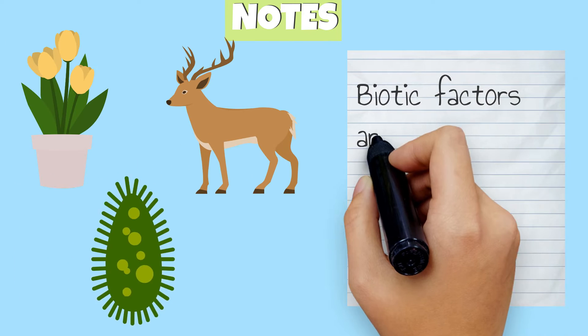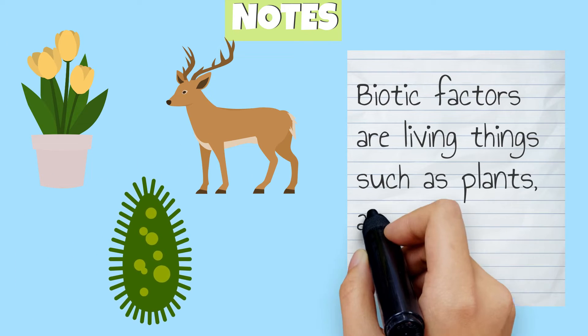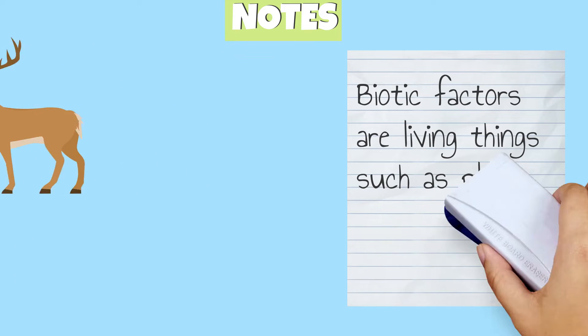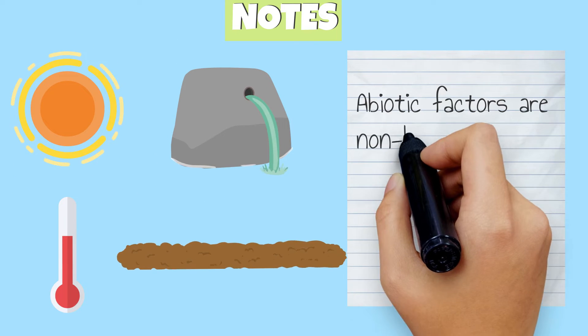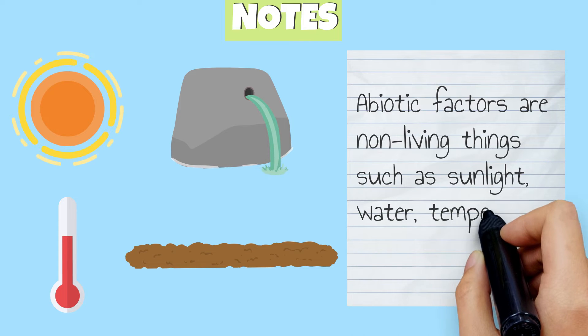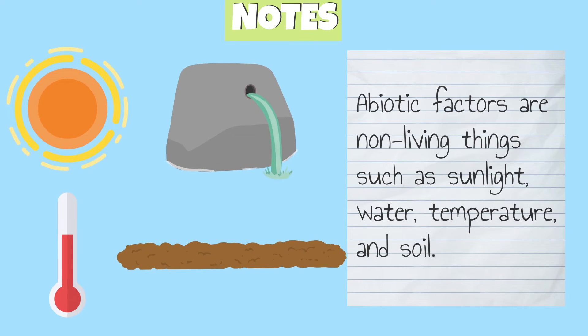Let's review what we just learned. Biotic factors are living things, such as plants, animals, and microbes. Abiotic factors are non-living things, such as sunlight, water, temperature, and soil.